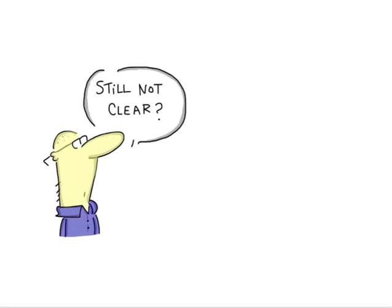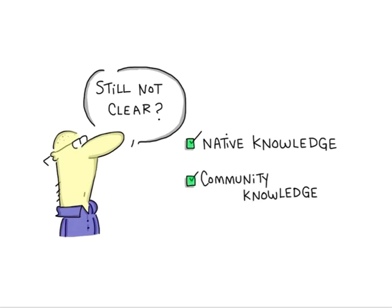Still not clear? Maybe these terms will help. Indigenous people have native knowledge, meaning they have knowledge that was formulated in a certain area over time and passed down generationally. They also have community knowledge, meaning the stories and facts that bind a local group together. And they also have folk knowledge, which may be presented in things like creation stories or legends that transmit moral truths.